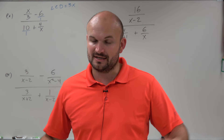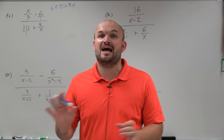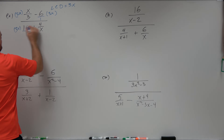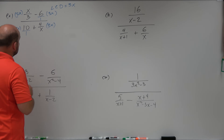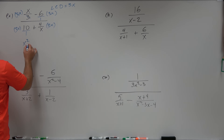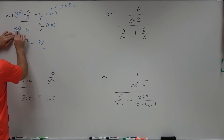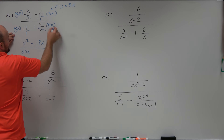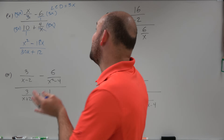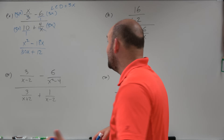Once you've identified the LCD, multiply it by everything. To produce equivalent fractions, we've got to make sure we multiply every single term by our LCD. By multiplying everything and using the division property, my 3s divide out, giving x times x which is x squared. Then minus 6 times 3x is 18x. All over: 3x times 10 is 30x, and here my x divides out, leaving 4 times 3 which is 12. So just by multiplying by the LCD, I got rid of all those extra fractions, and I'm left with one simple fraction.